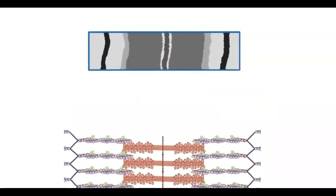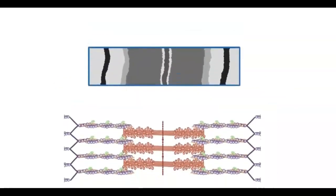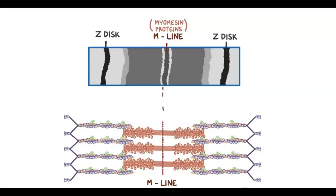All right, now let's zoom in and relate these bands to the structure of one sarcomere. At the center of the sarcomere is the M-line, made of myomycin proteins, where the thick filaments attach. At the borders of the sarcomere are the two Z-discs, made of alpha-actin proteins, where the thin filaments attach.